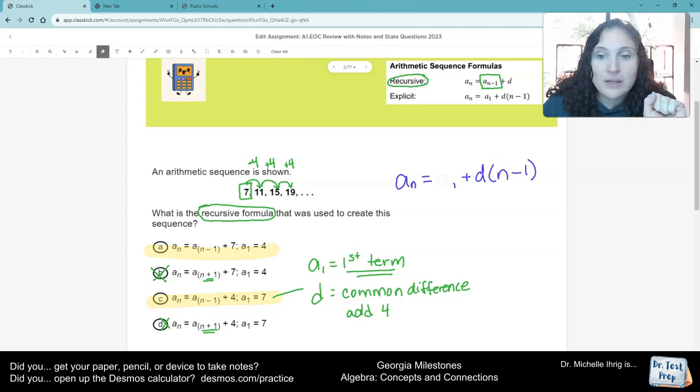Then you erase. What do we erase? Well, what's A sub 1? A sub 1 is my first term. So I'm going to put in 7. I don't touch anything with N's in it. Then I'm going to erase the letter D. What's the letter D? How many times it goes up?